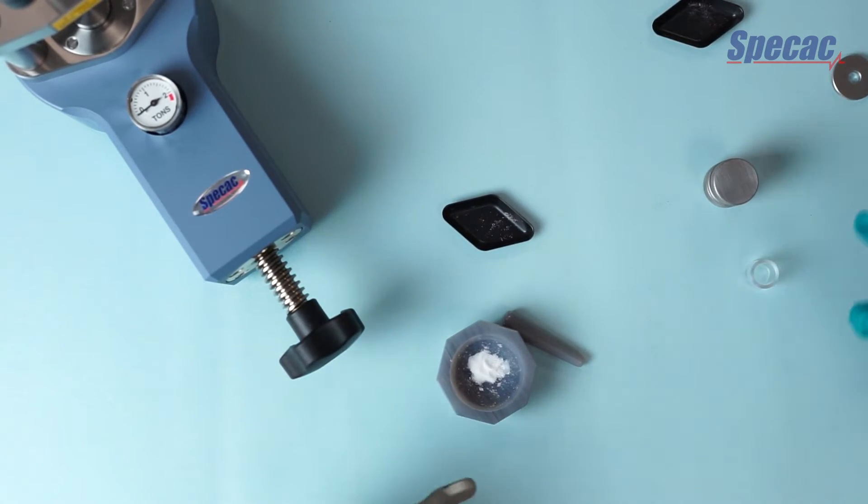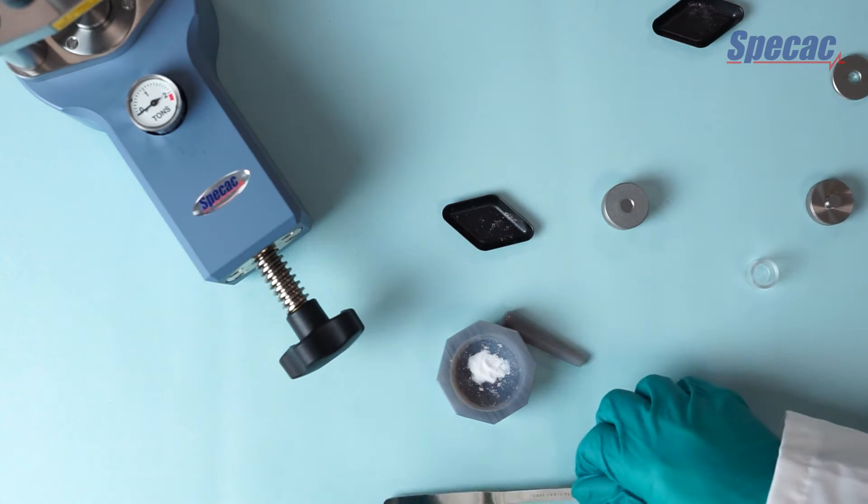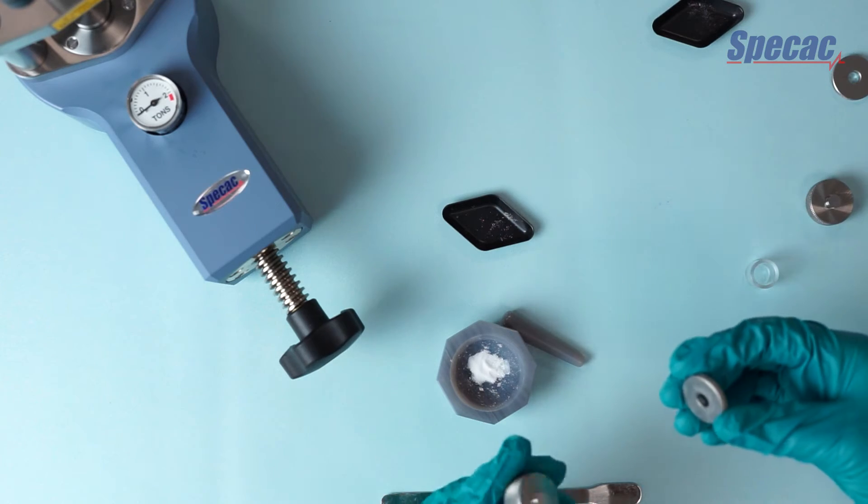When we're done with that, we assemble the pellet die, which consists of three parts. There's a lower anvil, which is identifiable from its recessed underside. There's a top anvil and there's a ring holder.